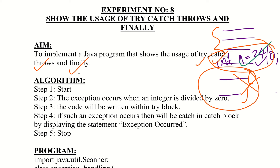There are three cases. In the first case, no exception occurs — the try block executes normally and the finally block always executes. In the second case, an exception occurs and is handled by the catch block, and then the finally block executes. In the third case, an exception occurs and is handled, and finally the block executes regardless.